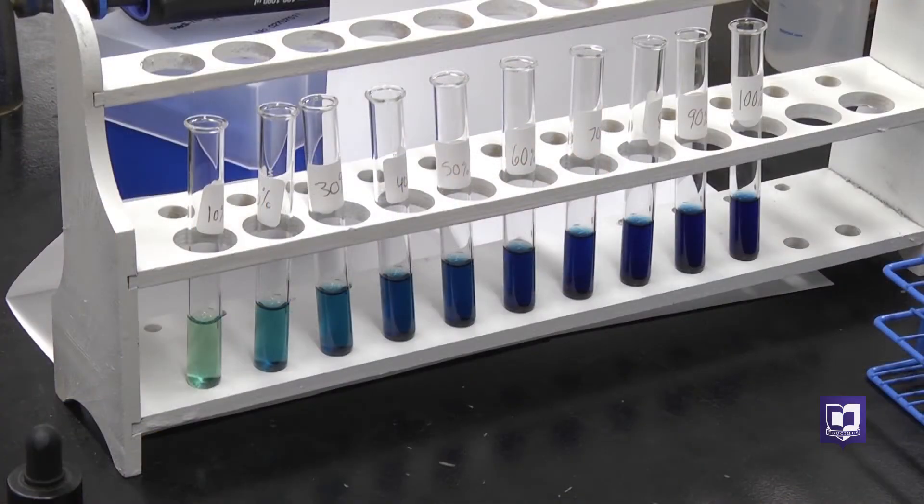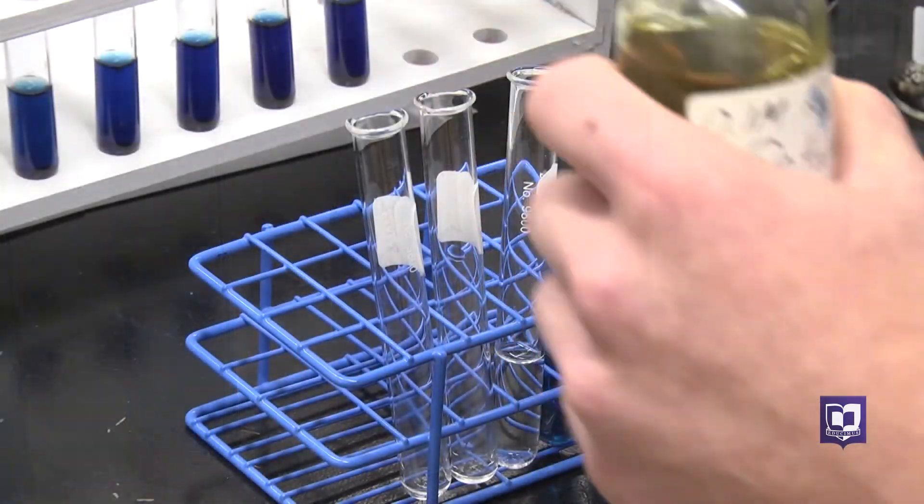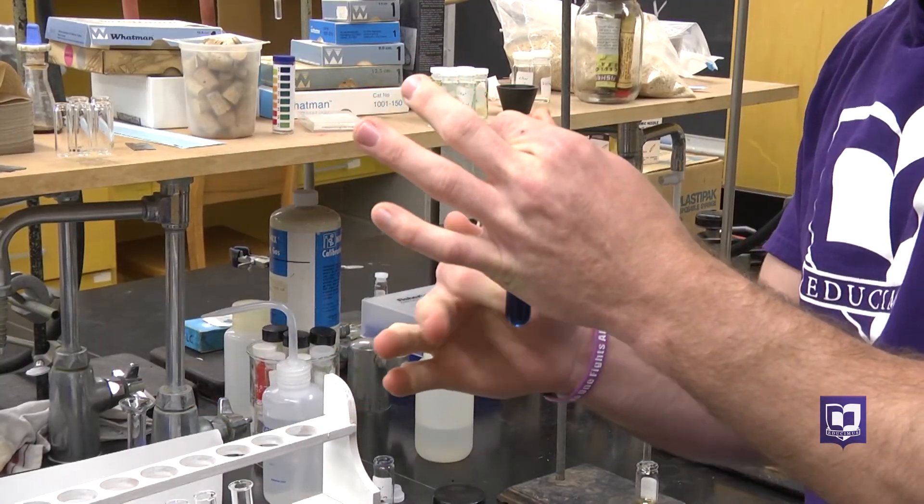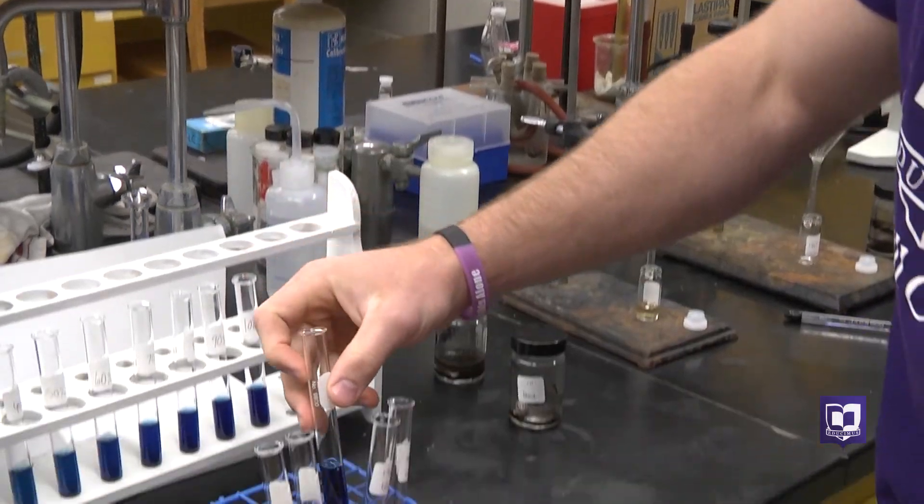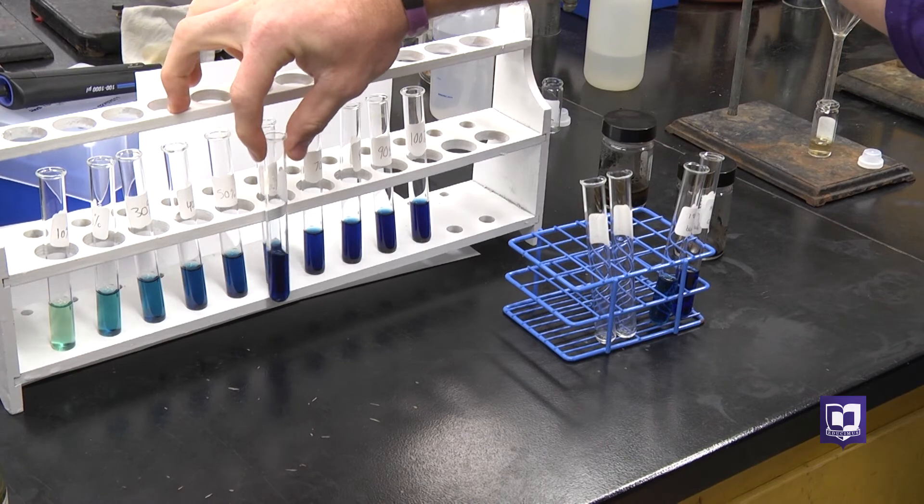But most people don't have the instrumentation that we have here, and so we're developing tests for concentrations of different metal ions that rely on color. All it takes is one drop of this potassium ferrous cyanide, and that creates a color reaction. We are able to remove sometimes up to 90 percent of the metal ions in the water, and of course we're just getting started.